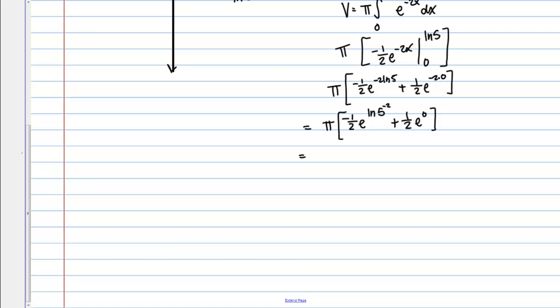So why did I do that? Well now since I've got E to the natural log of something, I can cancel out the E and the natural log because they're inverse functions. So I end up with negative 1 half times 5 to the negative 2, which is 1 over 25. And then plus, and this is just 1 half times 1.